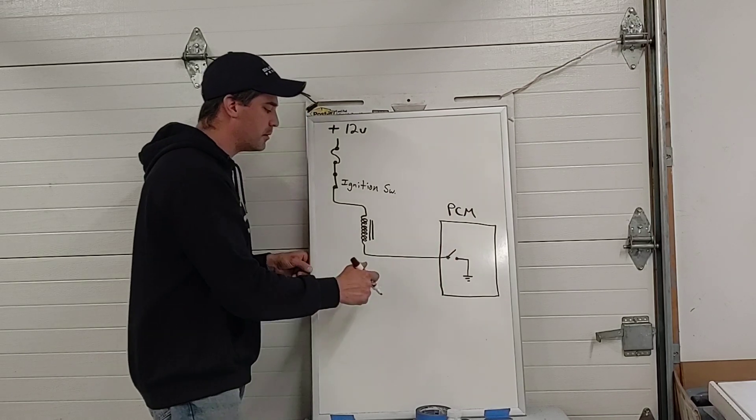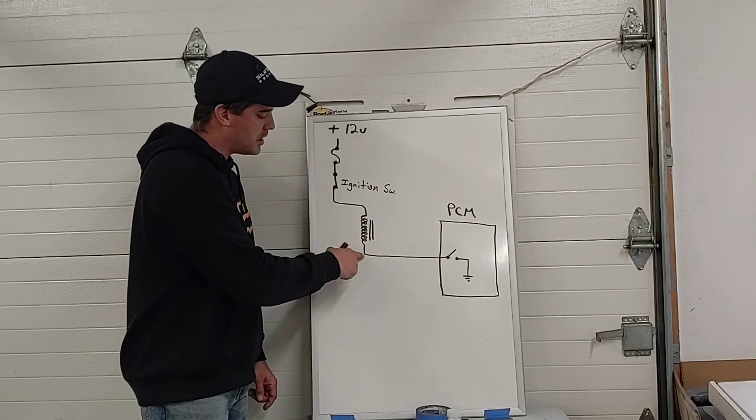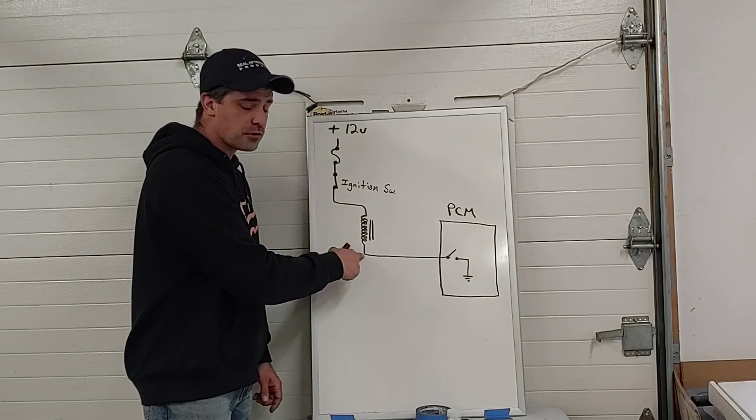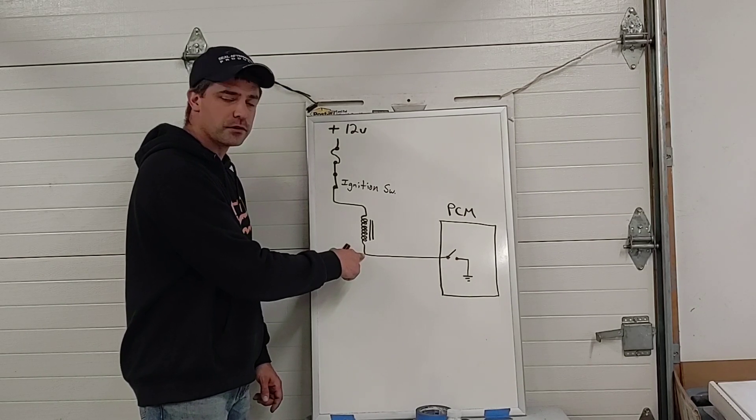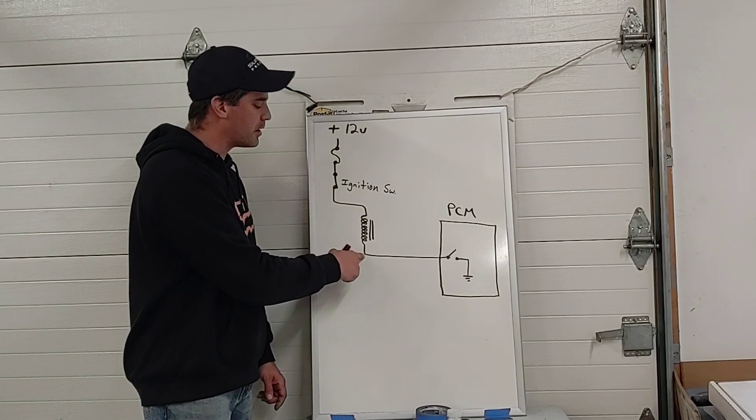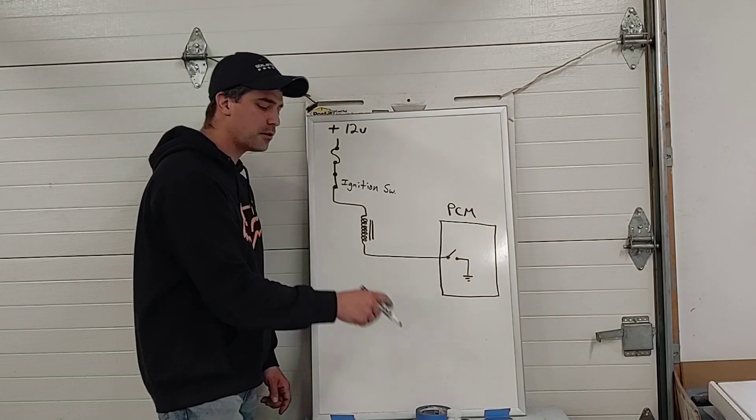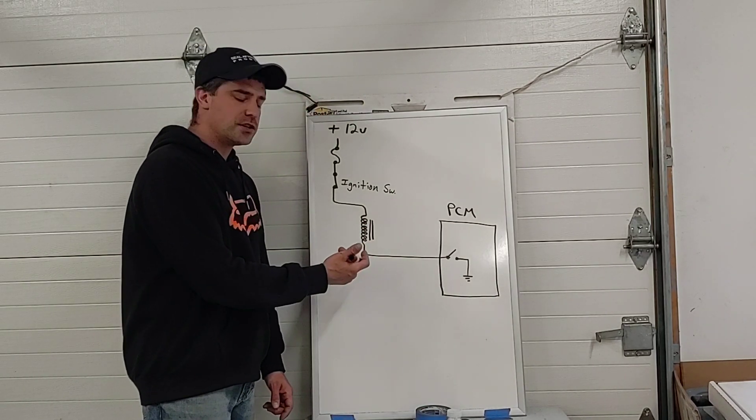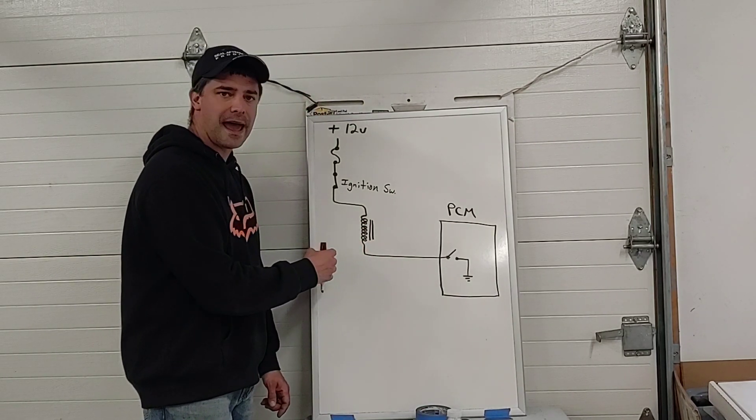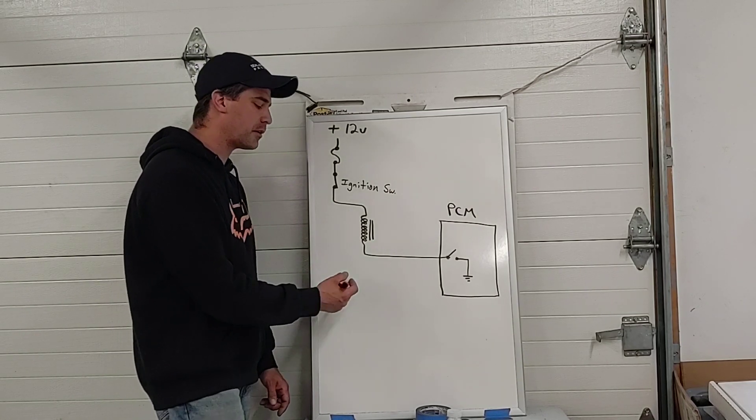So if we were to take a multimeter and connect here, we would see battery voltage. If we were to measure here with the engine running, we would actually see a slightly lower than battery voltage reading because what would actually be happening is this ground would be rapidly turning on and off. And the multimeter, just a plain digital multimeter, isn't fast enough to respond to that changing voltage. So it's going to show kind of like an average. So the correct tool to use for this is an oscilloscope or a graphing meter.